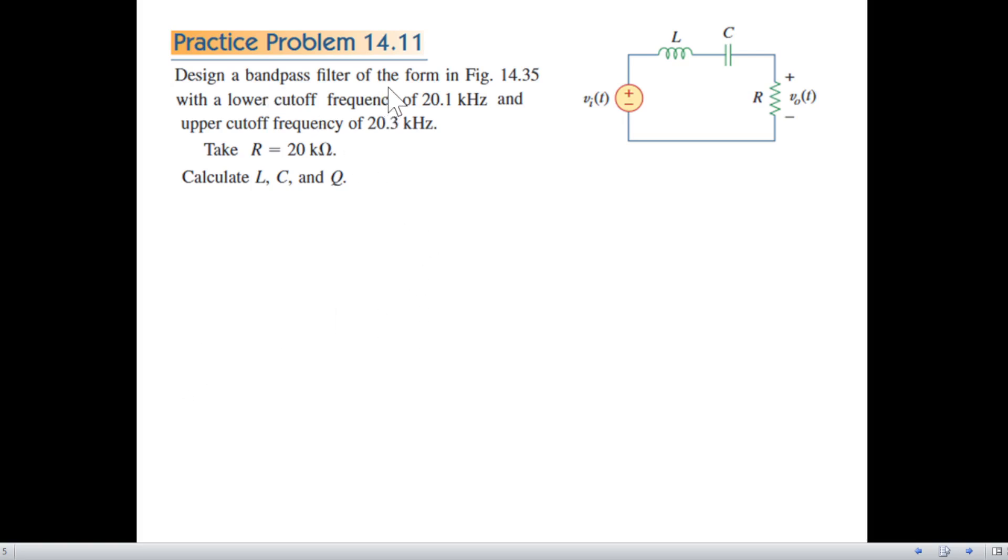So let's go to the question. Design a bandpass filter of the form in the figure. This is the form given with the lower cutoff frequency of 20.1 kilohertz and upper cutoff frequency of 20.3 kilohertz. Take R equal to 20 kilo ohms, so R is given 20 kilo ohms and we have to calculate the value of inductance L, the capacitance C, and Q which is the quality factor.